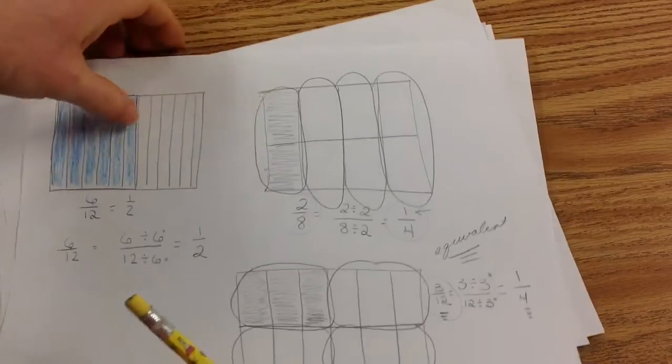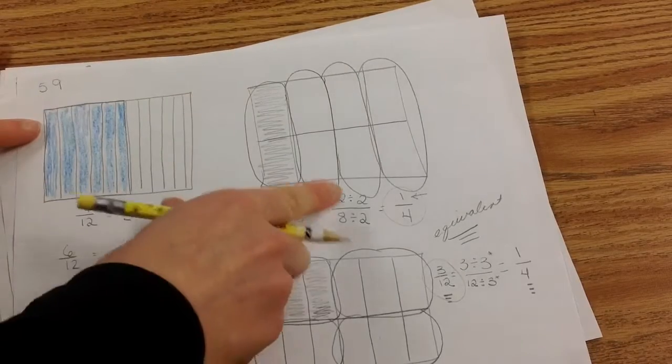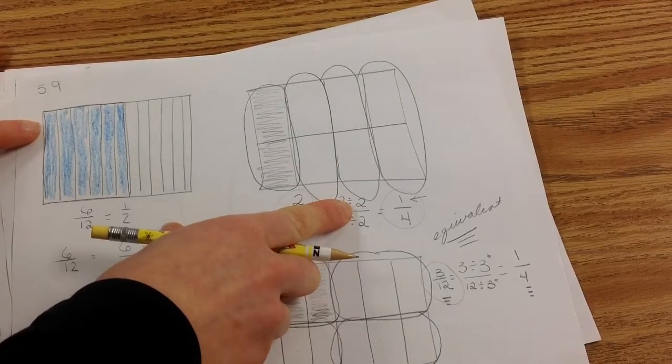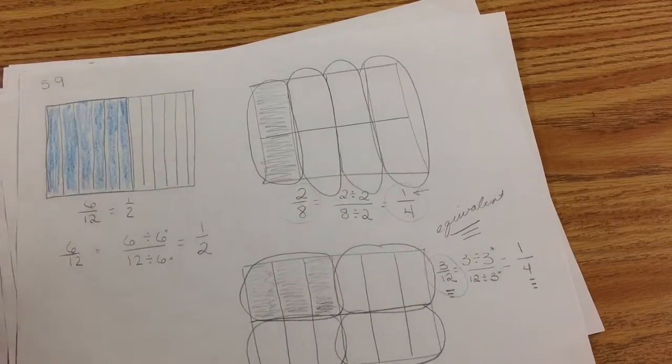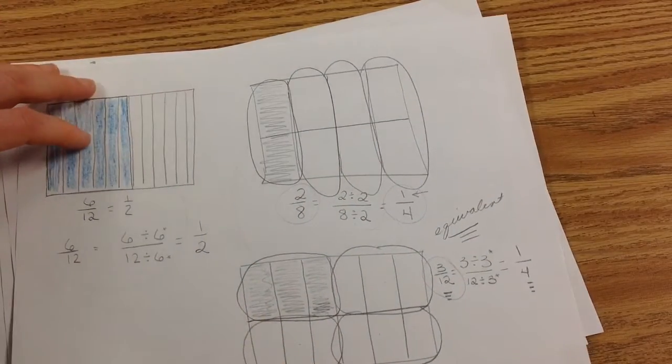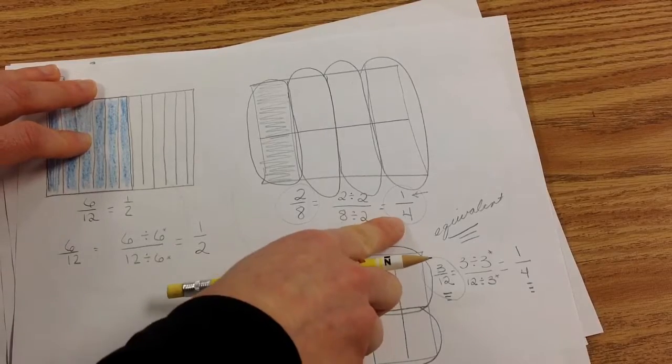So when we composed fractions in the last two problems, what were we doing? Well, we were dividing to find equivalent fractions. We were making equal groups to make larger units. And we were composing a unit fraction in the end.